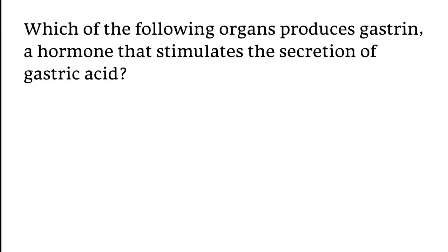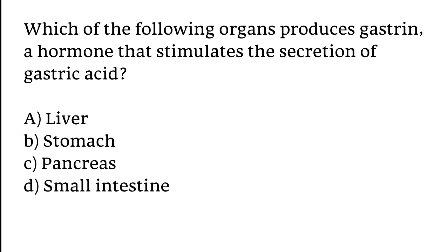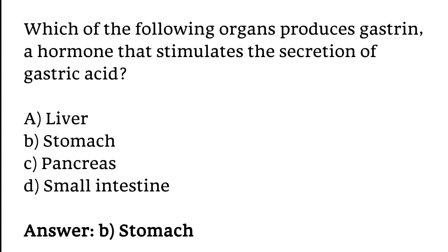Which of the following organs produces gastrin, a hormone that stimulates the secretion of gastric acid? Liver, stomach, pancreas, small intestine? The correct answer is option B. The stomach produces gastrin, a hormone that stimulates the secretion of gastric acid.